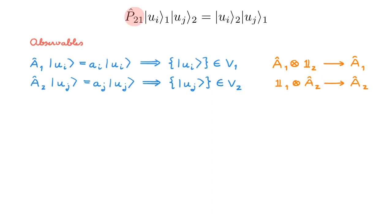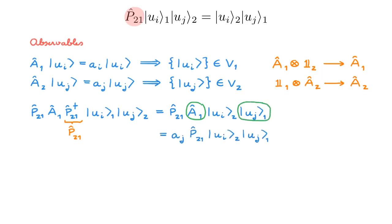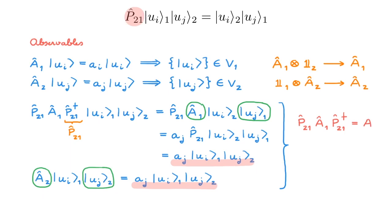To understand the interplay between permutations and operators, we consider the combination P21 A1 P21-dagger and its action on a basis state of V built as the tensor product of eigenstates of A1 and A2. Since P21 is unitary, we first exchange the particles with P21-dagger, apply A1 to the eigenstates from V1, then exchange back with P21. Comparing this with the action of A2 on the same basis state, we find P21 A1 P21-dagger equals A2. Similarly, P21 A2 P21-dagger equals A1. The permutation operator exchanges the action of an operator from V1 to V2 and vice versa.